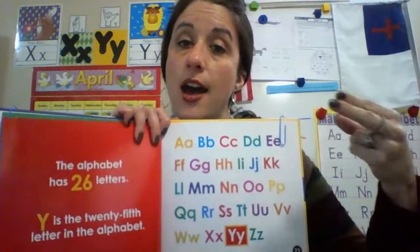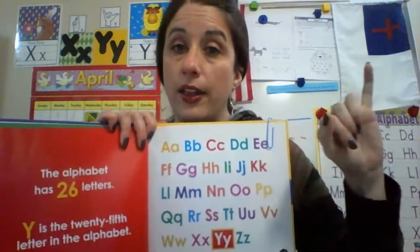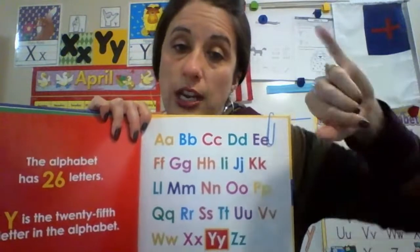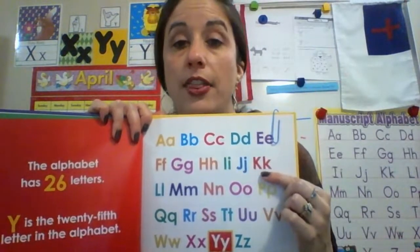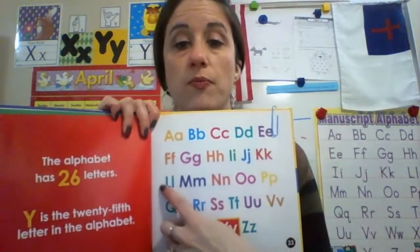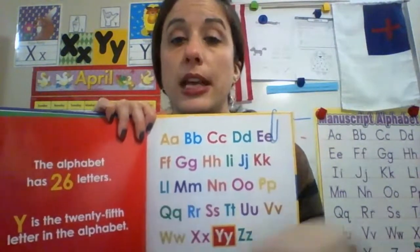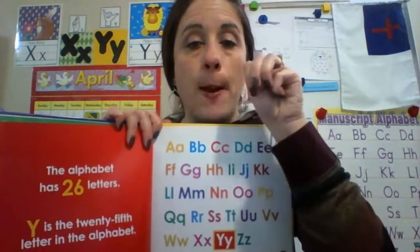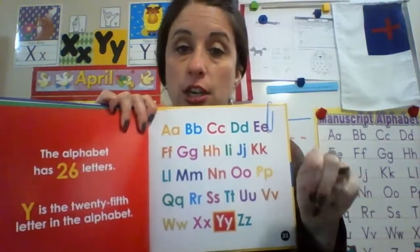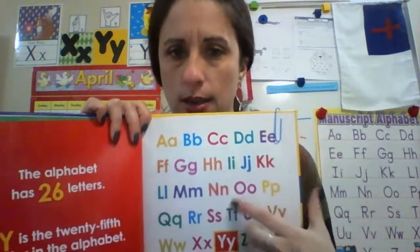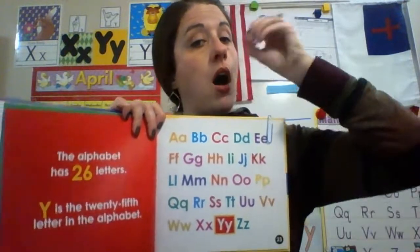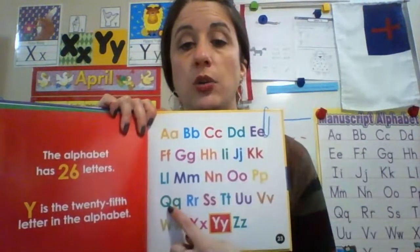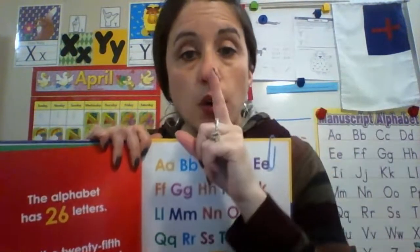H — the letter H, hah hah hah. I — the letter I, ih ih ih. J — the letter J, juh juh juh. K — the letter K, kuh kuh kuh. L — the letter L, luh luh luh. M — the letter M, mmm mmm mmm, like munch. N — the letter N, nuh nuh nuh. O — the letter O, oh oh oh. P — the letter P, puh puh puh. Q — the letter Q, qua qua qua.